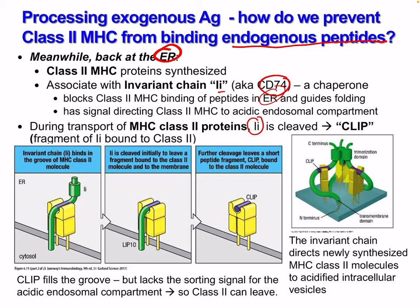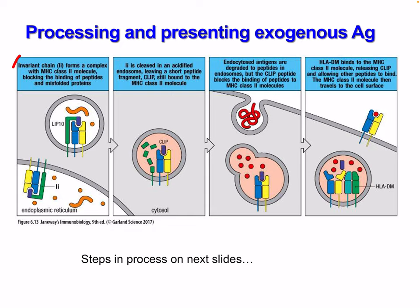During transport, the MHC class 2 protein invariant chain is cleaved, leaving a fragment called CLIP bound to class 2. The invariant chain binds in the groove of MHC class 2. Invariant chain is cleaved initially, leaving a fragment bound to the class 2 molecule and to the membrane. Further cleavage leaves a short peptide fragment called CLIP bound to the class 2 MHC. CLIP fills this groove but lacks a sorting signal for the acidic endosomal compartment, so class 2 can leave.